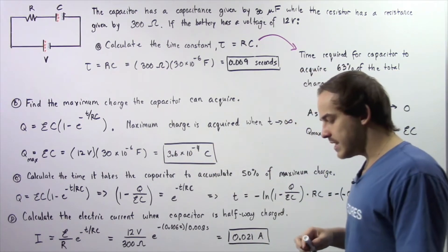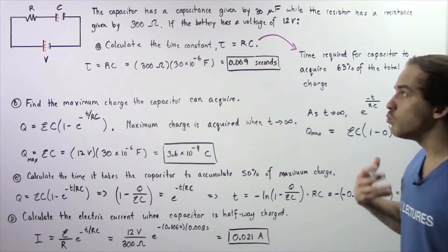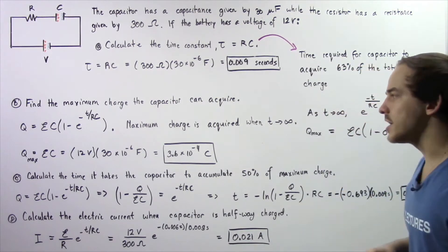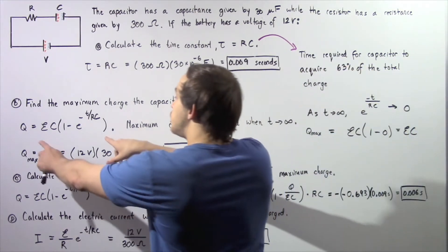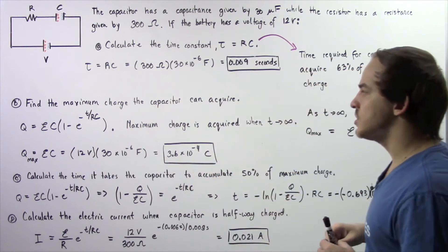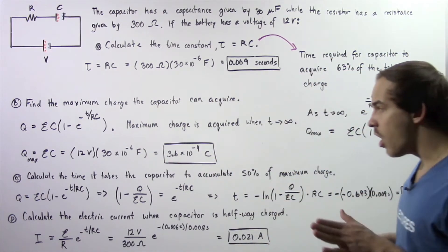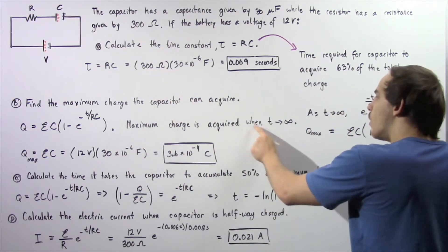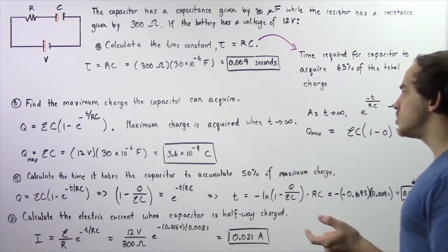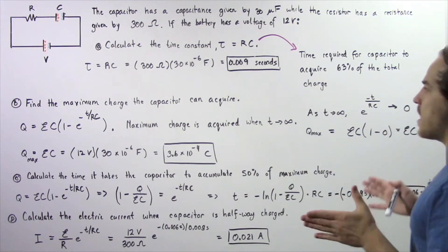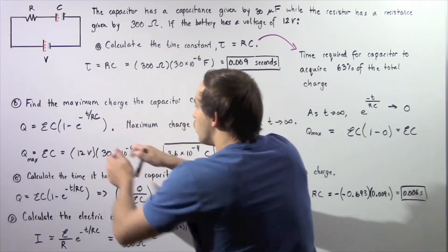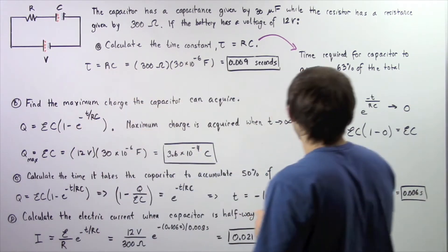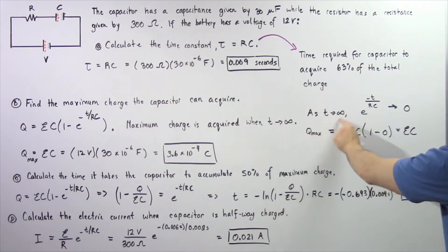Now let's move on to part B. In part B, we want to calculate the maximum quantity of charge that our capacitor can acquire. We use the equation derived in the previous lecture. The maximum charge is acquired when time approaches infinity, so we look at the term containing the time value.